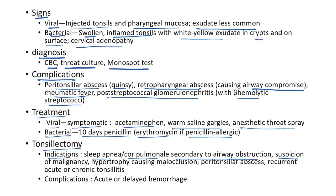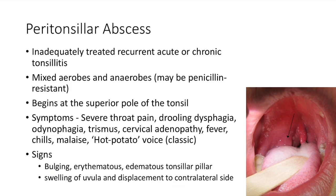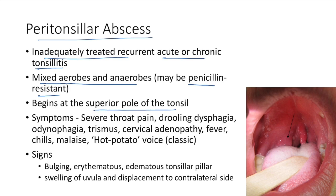Peritonsillar abscess is a complication of tonsillitis from inadequately treated recurrent acute or chronic tonsillitis. It is a mixed infection with both aerobic and anaerobic pathogens, which may be penicillin resistant. It usually begins at the superior pole of the tonsil. Symptoms include severe throat pain, drooling, dysphagia, odynophagia, trismus, cervical lymphadenopathy, fever, chills, malaise, and a classical hot potato voice.